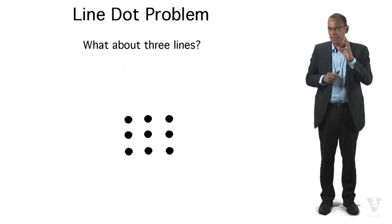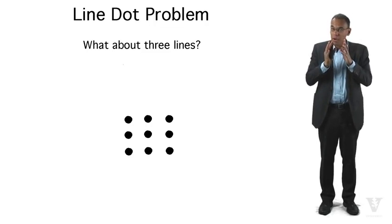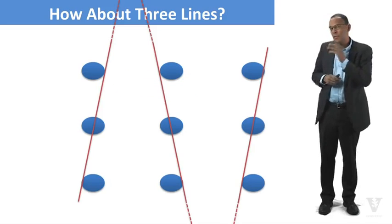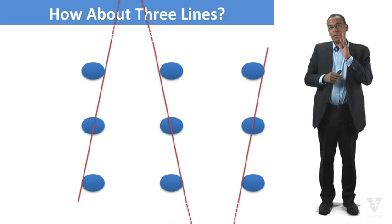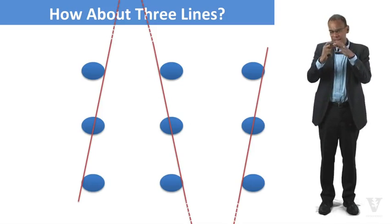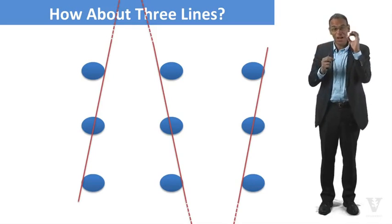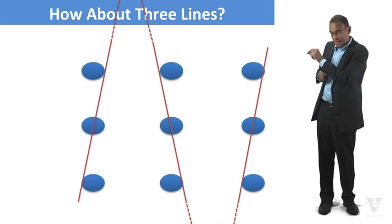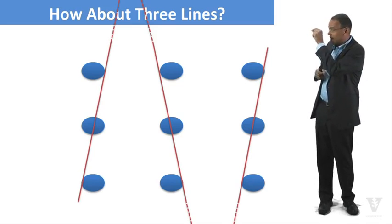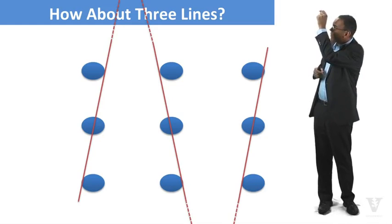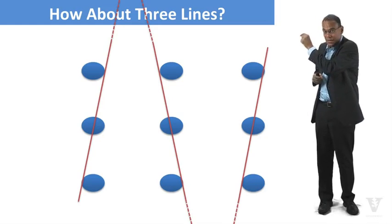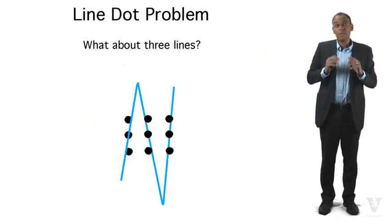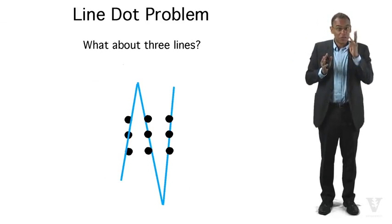This is going to require some reframing of the problem. So how about this solution? We take the nine dots and start with the idea that the dots are not infinitesimal points — the dots are actually dots with actual size. We can start a line on the outside edge of one dot, come up through the middle of the next, through the inside edge of the next, go up until it connects, then come back down at a slight angle all the way, and back up again. We've connected all nine dots using just three lines.